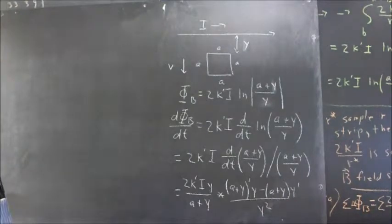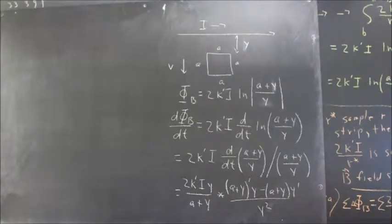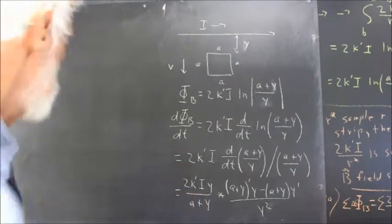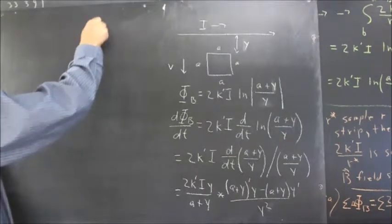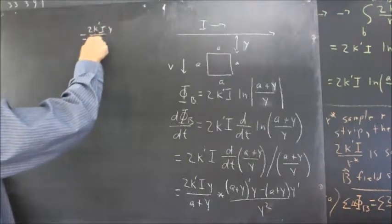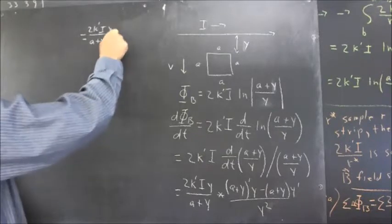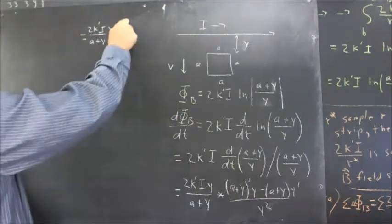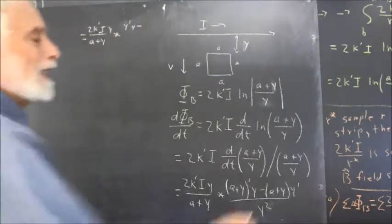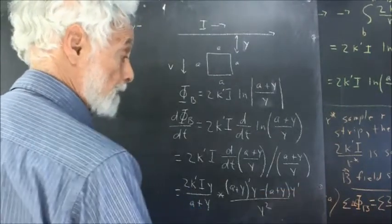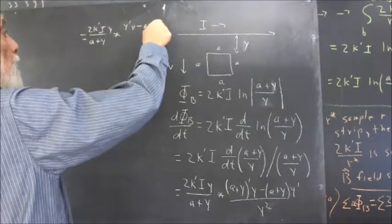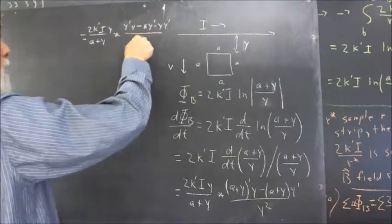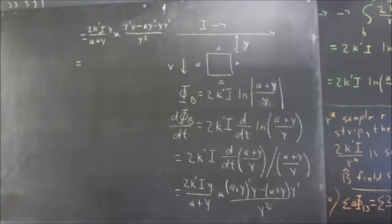We're going to get zero — and we know that isn't right, so see if you can see what went wrong. If I actually write it out, I won't have that problem. This is going to equal 2k prime i · y over (a + y), and then times: we're going to get a · y prime · y, minus (a + y) times y · y prime. So we get a · y · y prime — that'll be negative — and we also get negative a · y prime, minus y · y prime, divided by y squared.